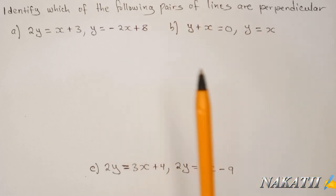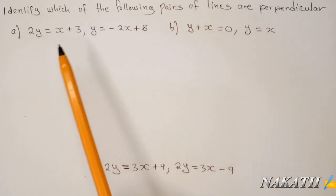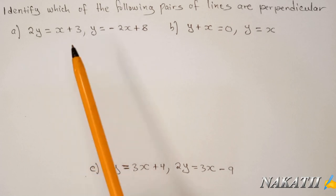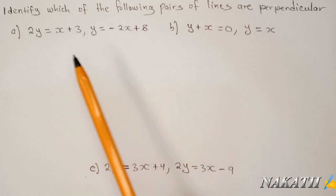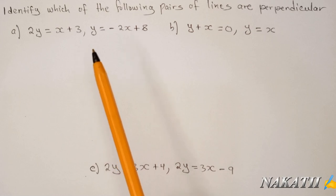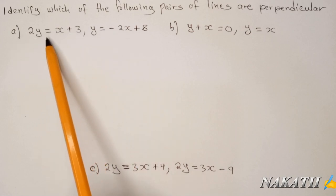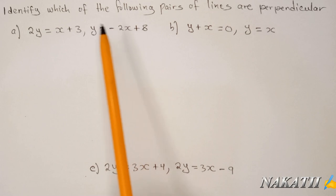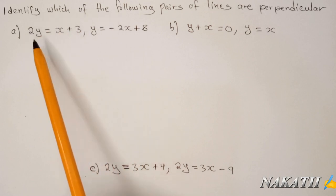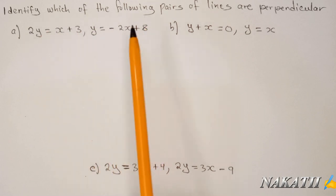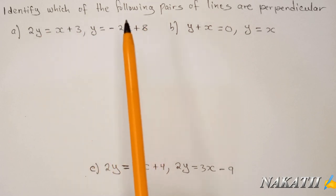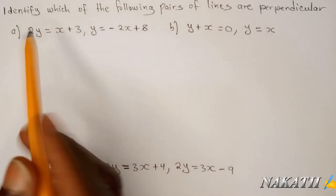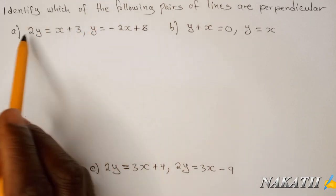The one thing you're supposed to know is that when two lines are perpendicular, if you multiply their gradients, you're supposed to get negative one. So if the gradient of one line is M1 and the gradient of the other is M2, then M1 times M2 should always equal negative one if they are perpendicular. So let us find the gradient of this first pair.